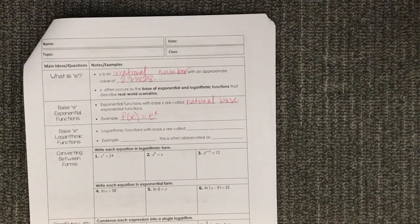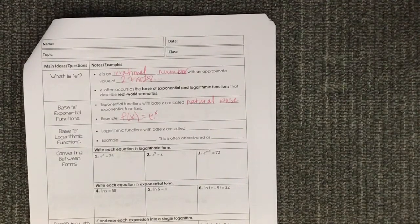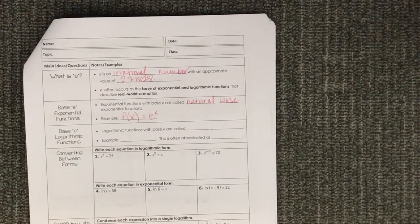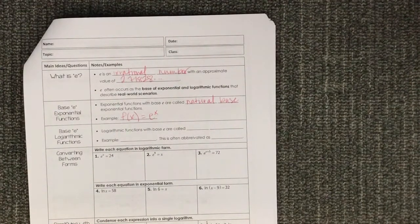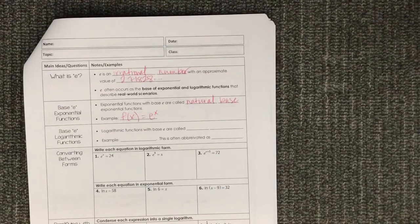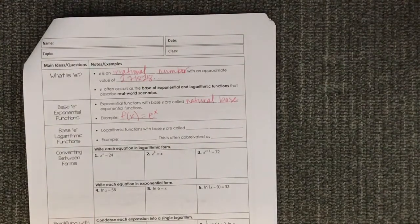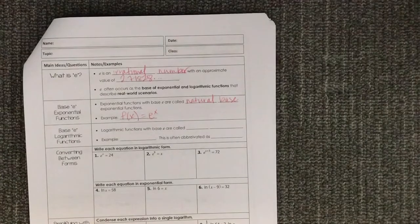When you look on your calculator you've noticed there's a log button and there's also an LN button. The LN button is log base E. Log button is log base 10.